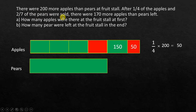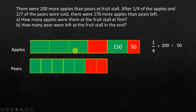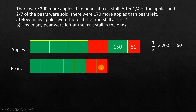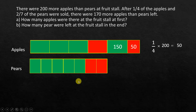And two-sevenths of the pears were sold, so we divide them into seven equal sized units and two of those will be sold. One thing to note is that the unknown part of the apples is exactly equal to the unknown part of the pears. The only difference is apples are divided into four equal units and pears into seven equal units. If we can somehow divide them into equal number of units, the unit sizes would be the same — and the simple trick for that is to use LCM.